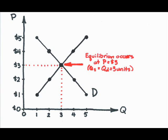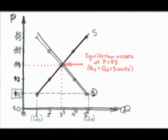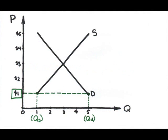Why is this the equilibrium? Because no other price would be stable — all other prices would have a tendency to change. At a dollar, for instance, the buyers are happy; they'd love to buy 5 units. But the sellers are unhappy — they're only willing to provide 1 unit to the market. A situation like this, where the quantity demanded is greater than the quantity supplied, is referred to as a shortage.